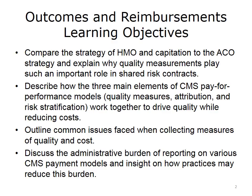The learning objectives for this lecture are to compare the strategies of health maintenance organizations, or HMOs, and current accountable care organizations, or ACOs, so we understand how the lessons learned from the experience of HMOs in the 1990s inform today's shared risk contracts and quality measurement; describe how quality measures, attribution, and risk stratification work together to drive quality while reducing costs; outline common issues related to collecting quality and cost measures; and discuss the administrative burden of reporting on various CMS payment models and insight on how practices may reduce this burden.